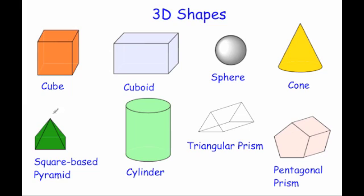Next, a square base pyramid. It's got a square at the bottom and it's got four triangles that all come together and meet at the top. So that would be a square base pyramid. A typical example would be the pyramids in Egypt.